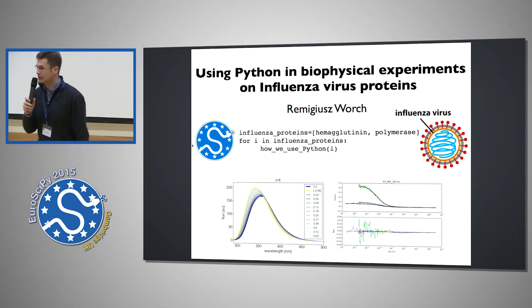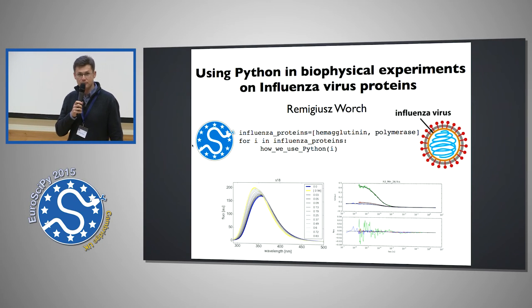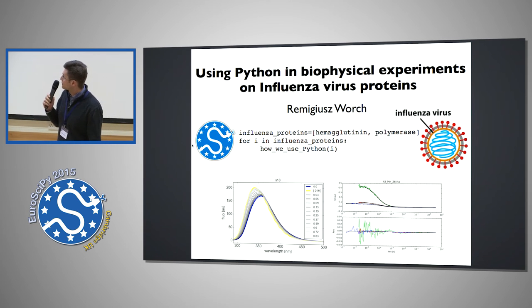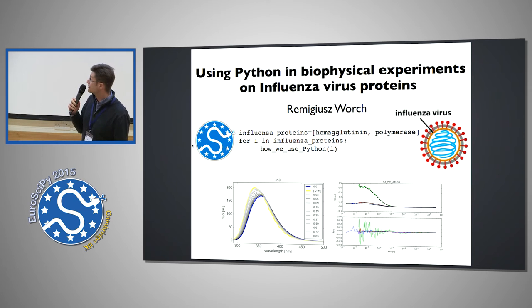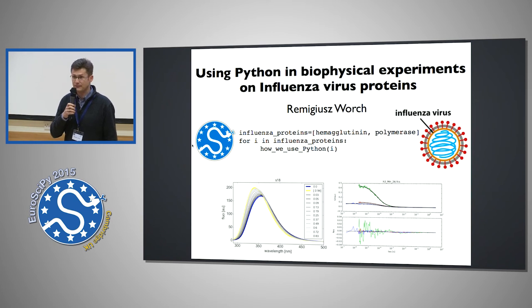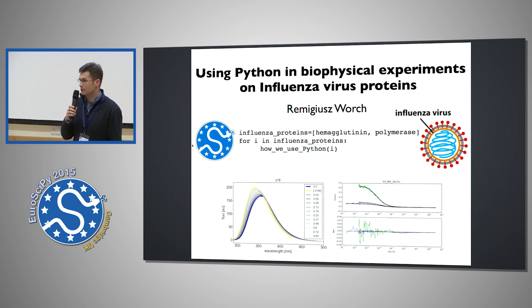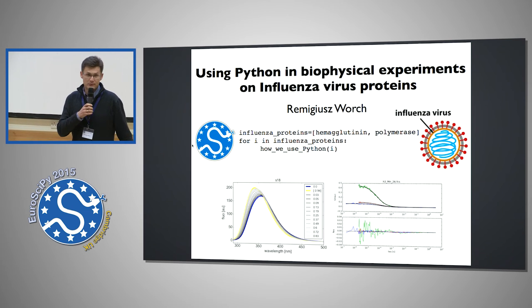My name is Remikius Vorg. I am a biophysicist and I work on influenza virus proteins in a lab in Warsaw, Poland. We do mainly spectroscopic and microscopic experiments. At the very end, we need to handle the output text files, and for this purpose we use, of course, Python. If you want to know how we do this and if you want to know more about influenza, please come to my poster.